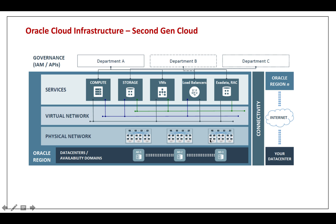Now let's look at the Oracle region layer by layer, from bottom to top. The first layer is the Oracle Data Region, which is simply a geographical area — like EMEA or US. Data Regions are used to provide disaster recovery. Inside a Data Region, there are multiple Availability Domains, or ADs. As you can see in the figure, inside the Oracle region there are three ADs — Availability Domains.